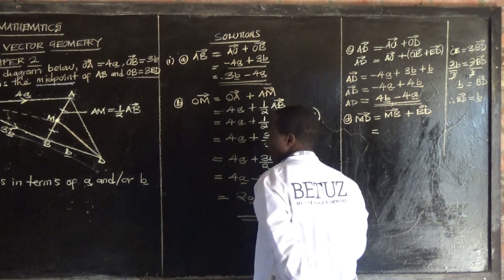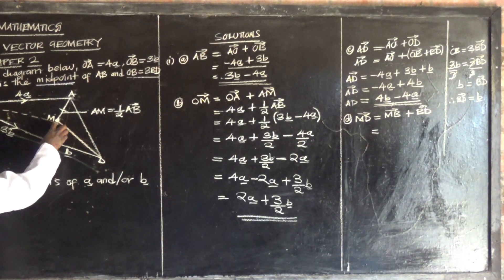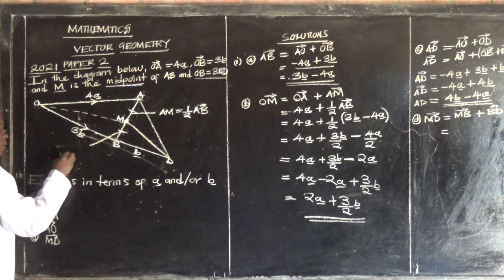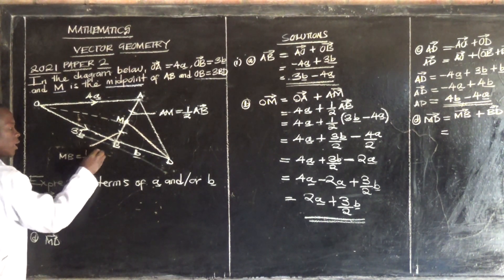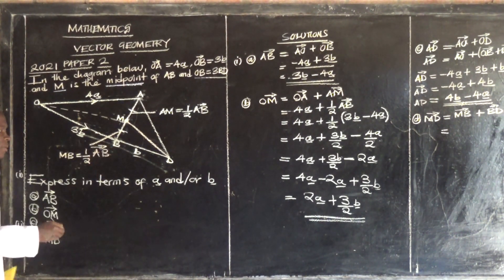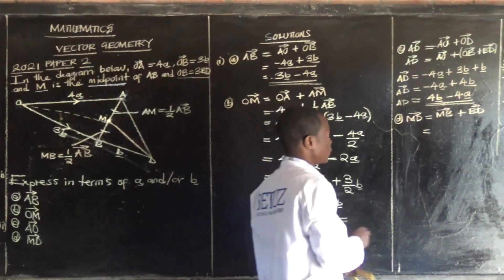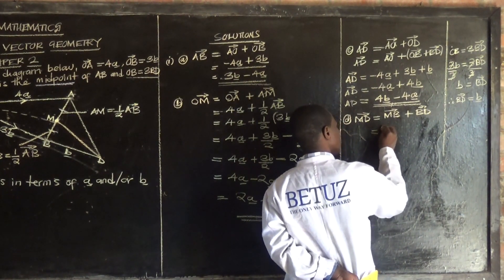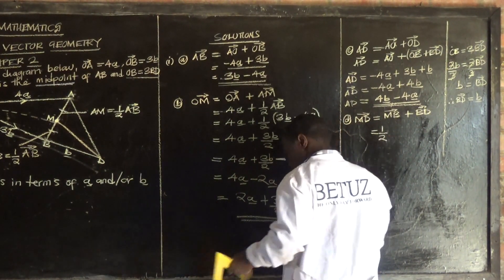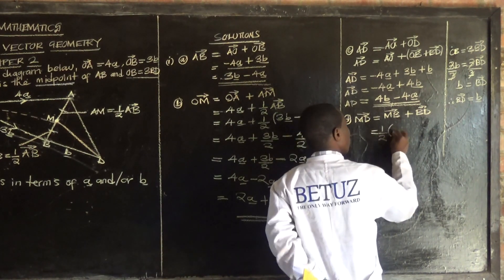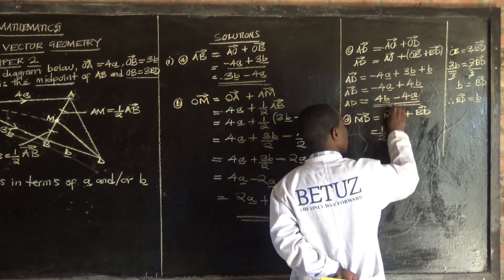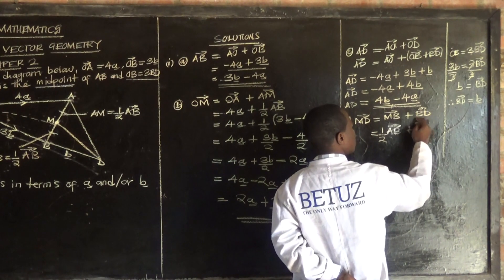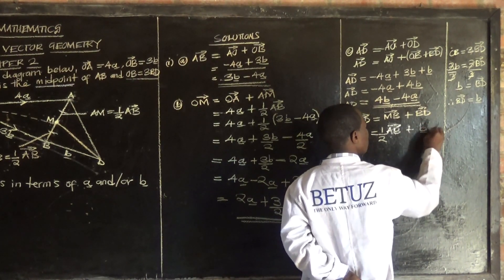What is MB? Remember MB should be half — it's half of AB. So MB is one over two of AB. And BD is vector b.